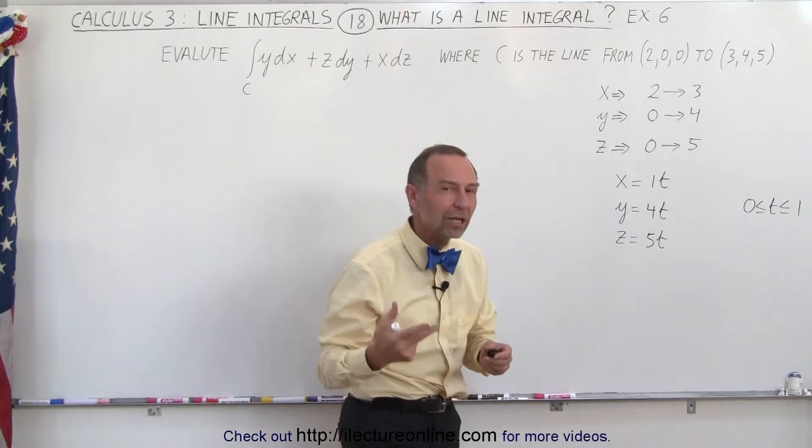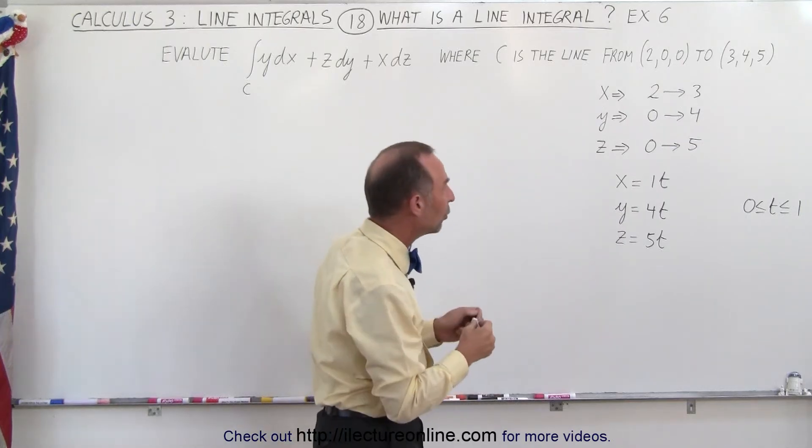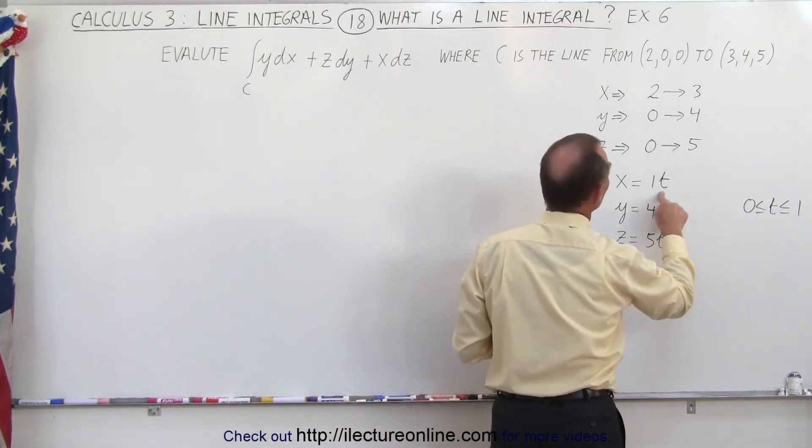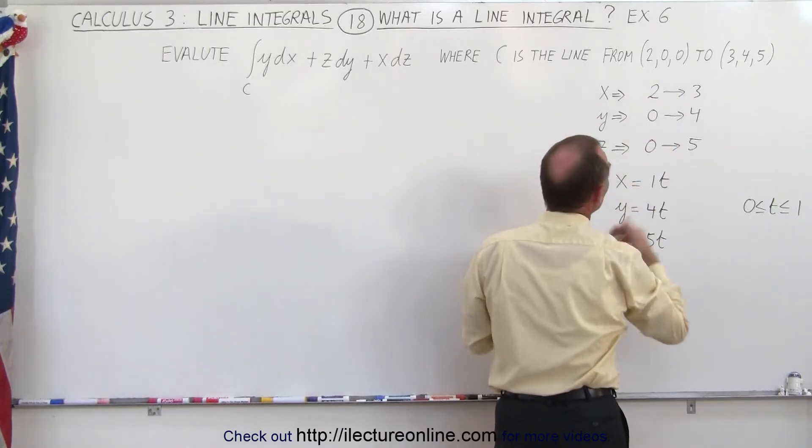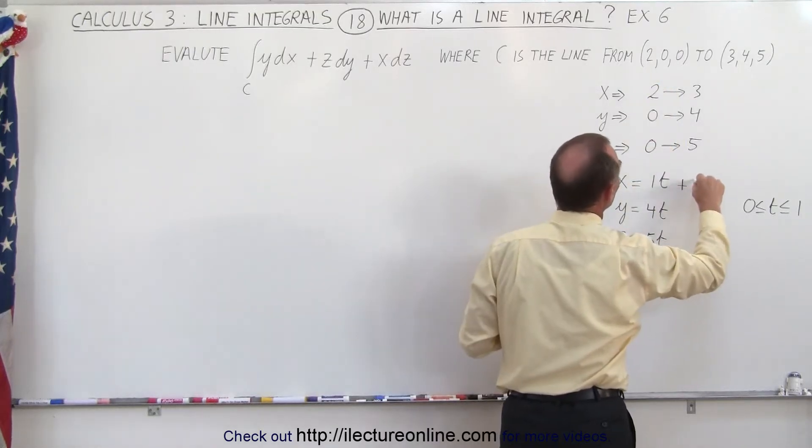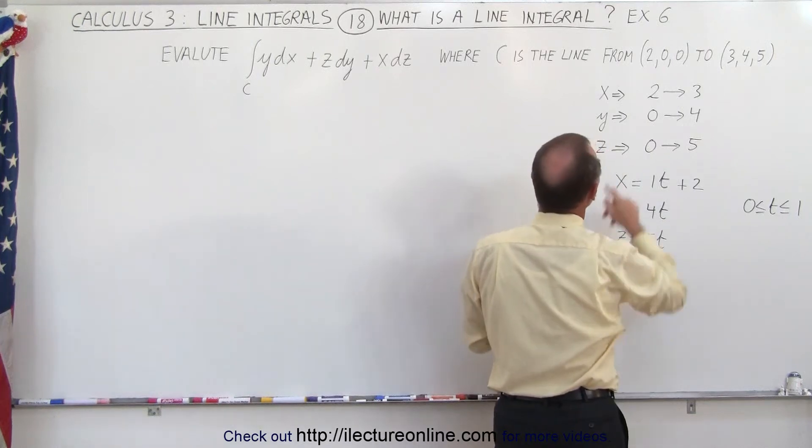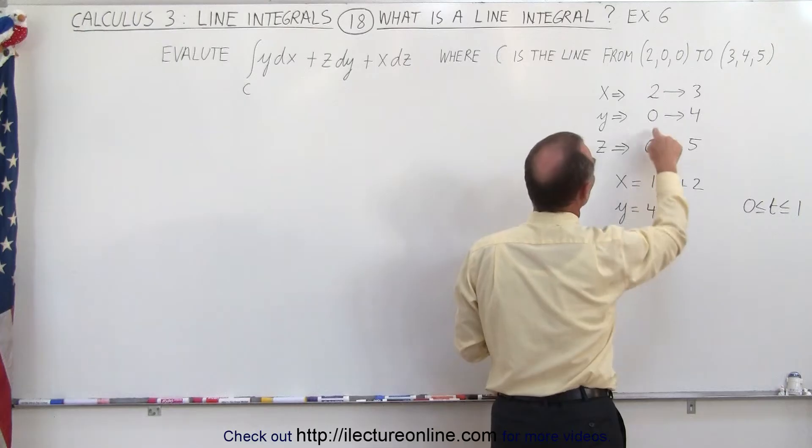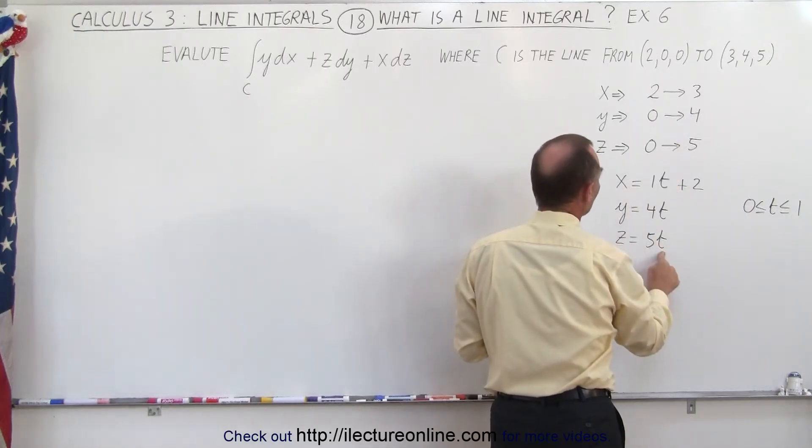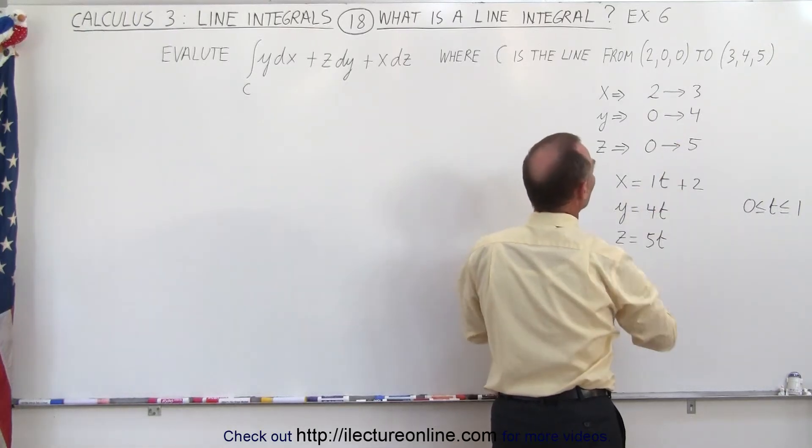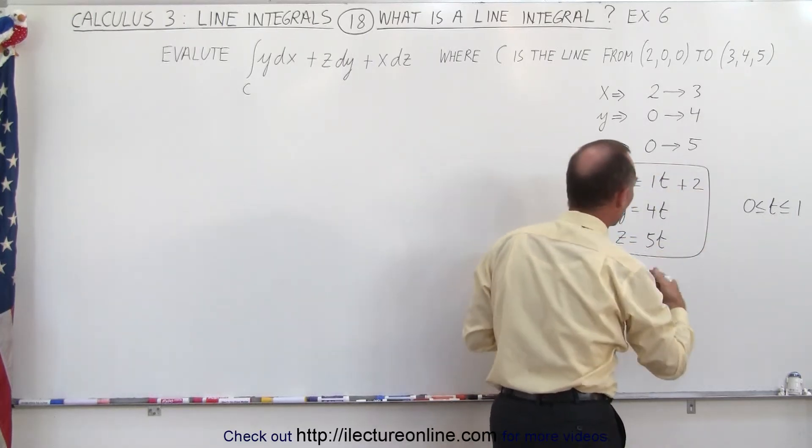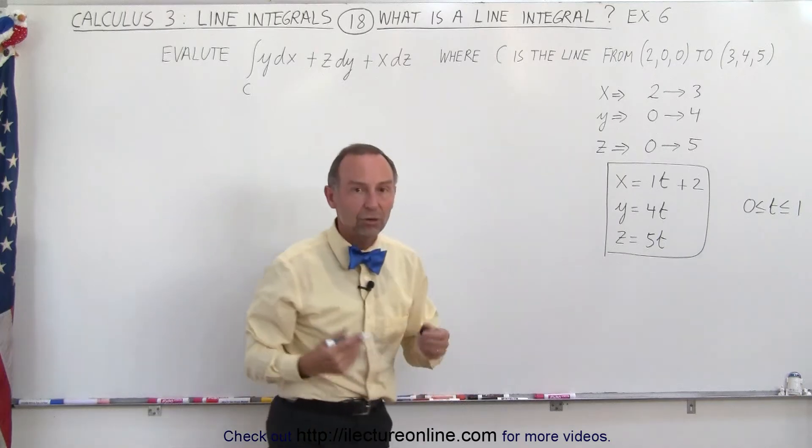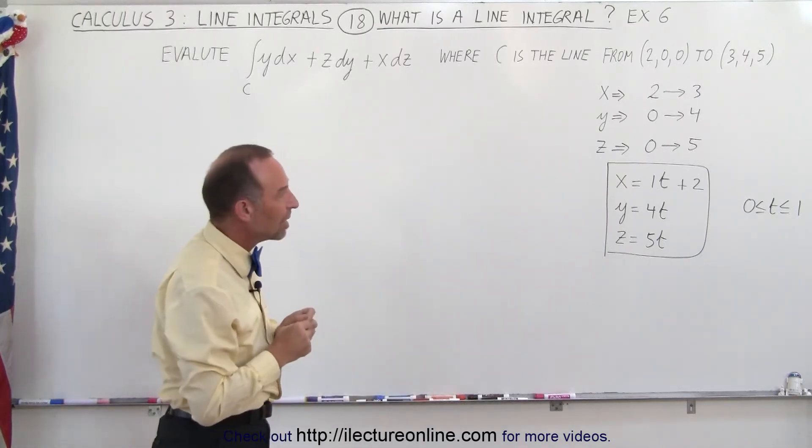But then we need to see if there's any constants that we need. And notice that when t is equal to 0, x should be equal to 2, which means that we need to add a 2 here. But in the case of y and z, when t is equal to 0, y is equal to 0, which is good. And when t is equal to 0, z is equal to 0, which is good. So here are the three parametric equations that can transform x, y, and z into a function of t.